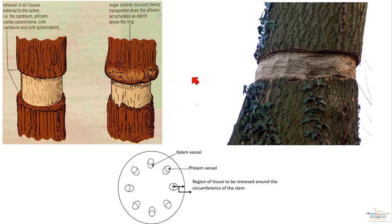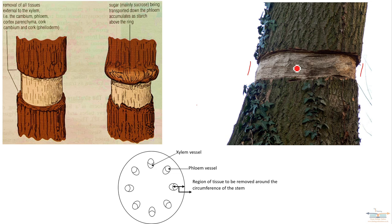The next piece of evidence is called the ringing experiment. In this experiment, you remove the bark layer and the layer containing the phloem vessels from a tree trunk — all the way around — so this region has no phloem. Because the removal goes all the way around the trunk, it looks like a ring, which is why it's called the ringing experiment.